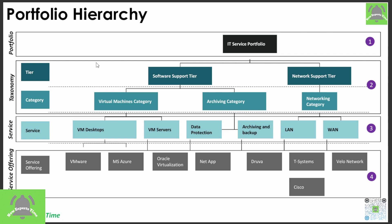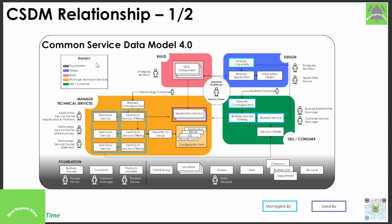There is a relationship with CSDM. In CSDM version 4, there is a 'Sell and Consume' area — you can see Business Service Offering, Business Services, Request Catalog Item, and Business Consumes. Those areas can be derived with the help of Service Portfolio and Digital Portfolio Management.